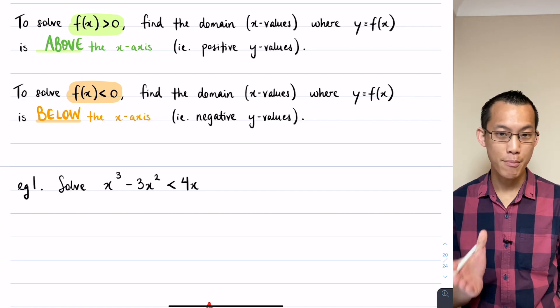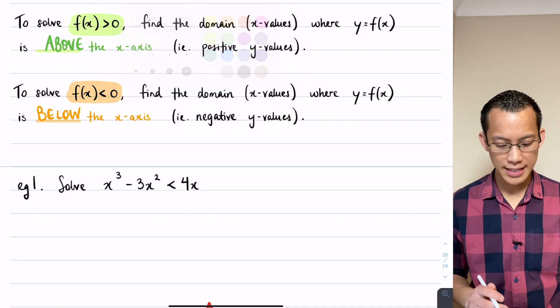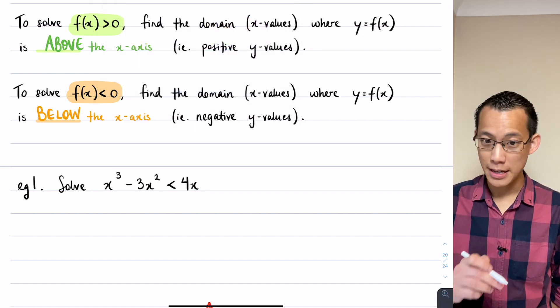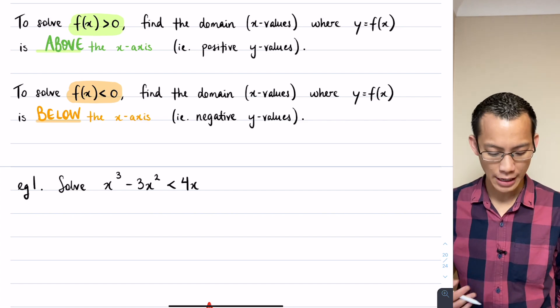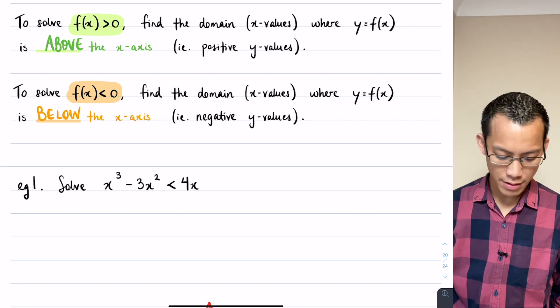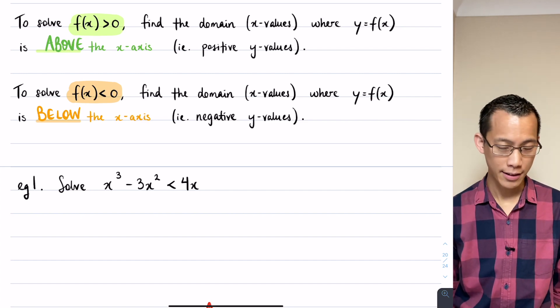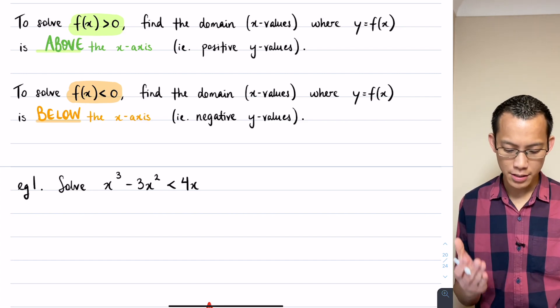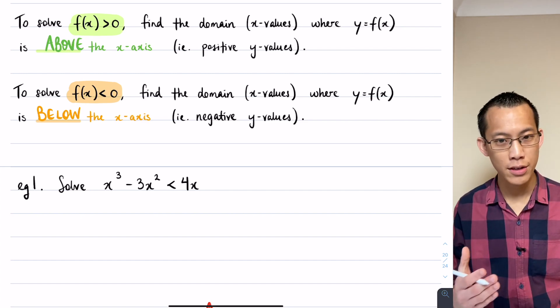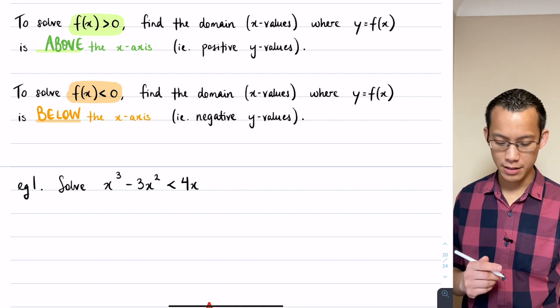Here's an inequality that I'm asking you to solve and you can see that first term there, x cubed, means this is going to be a bit of a wiggly graph. You've got x cubed minus 3x squared is less than 4x. So I'm going to follow my own advice, I'm going to solve this question by getting everything on one side and making the right-hand side zero.